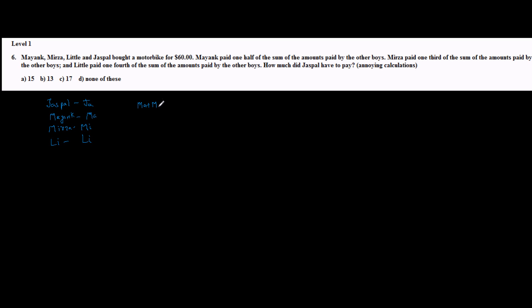Now if I start forming the equations, I would form the first equation: MA plus MI plus LI plus JA equal to 60, because total amount spent by them was $60 to buy a motorbike. Next equation: Mayank paid one half of the sum of the amounts paid by other boys. So that is MI plus LI plus JA, and Mayank paid half of it. So this should be equal to MA.